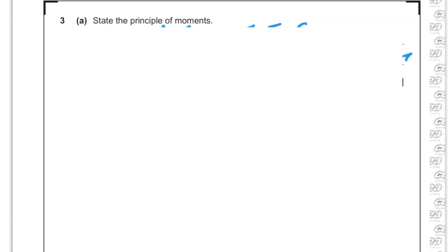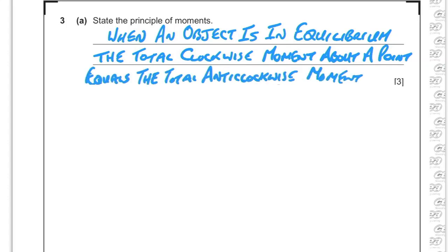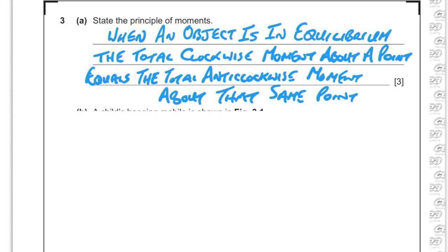Part 3A asks us to state the principle of moments — three marks because there's more to it than just saying clockwise equals anti-clockwise. Firstly, both moments must be about the exact same point. Secondly, they're only equal when the object is in equilibrium. So: when an object is in equilibrium, the total clockwise moment about a point equals the total anti-clockwise moment about that same point.